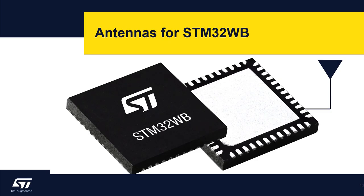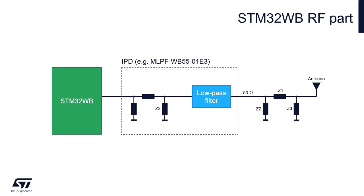Now let's focus on antennas for STM32WB. The RF part of STM32WB looks like this: RF pin which is shared both for transmitter and receiver is connected to the matching network and the low-pass filter. These blocks are also implemented in IPD if used. The output of the filter is connected to the antenna through the matching network which matches impedance of the antenna to 50 ohms.